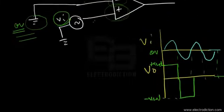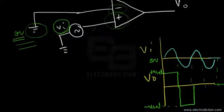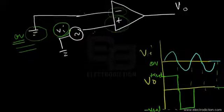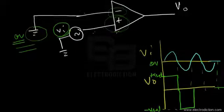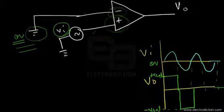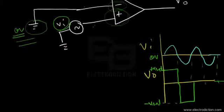So we can basically see that the op-amp monitors which voltage level on which of its inputs is higher. Whenever the voltage level on its non-inverting input — that's its positive input — is higher, it outputs a voltage equal to the positive saturation voltage level. And whenever the input voltage level on its inverting input is higher, then the output of the op-amp is the negative saturation voltage level.